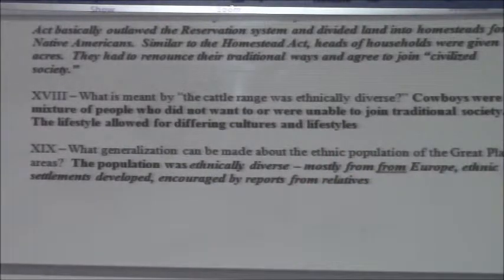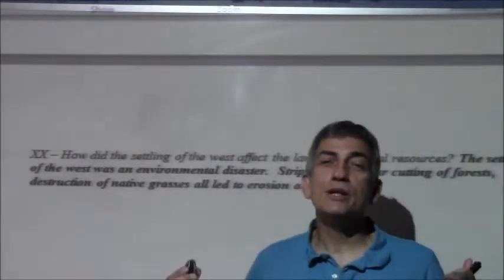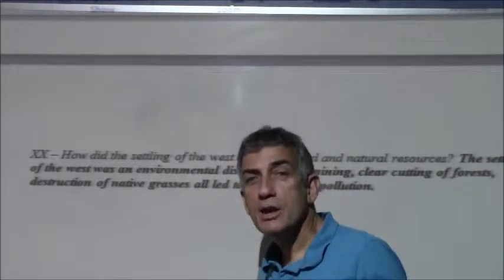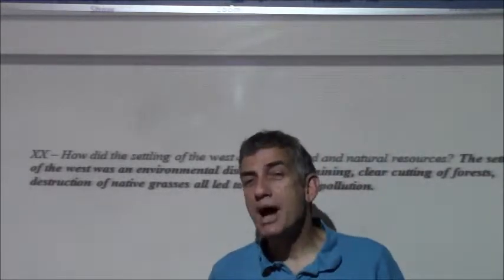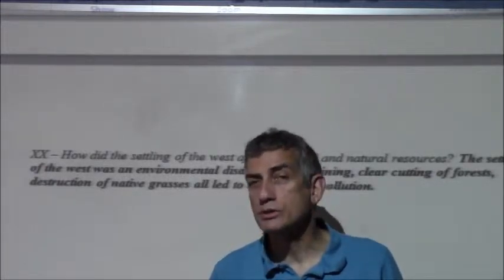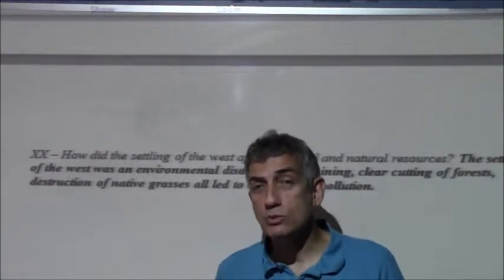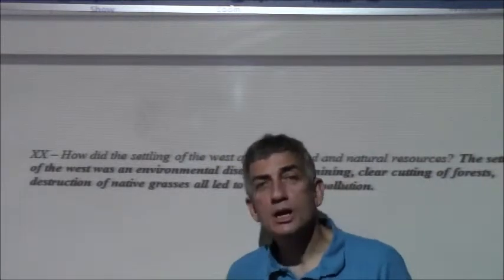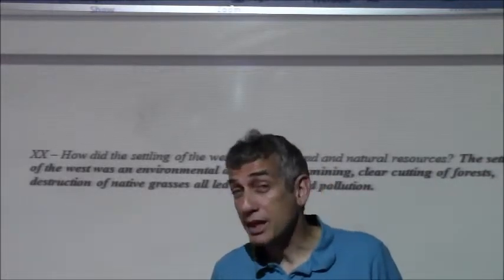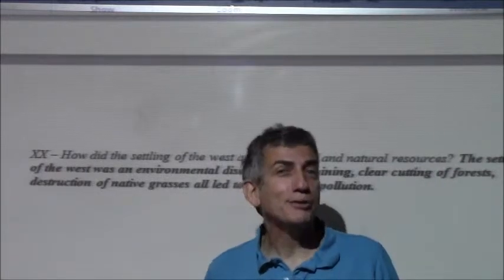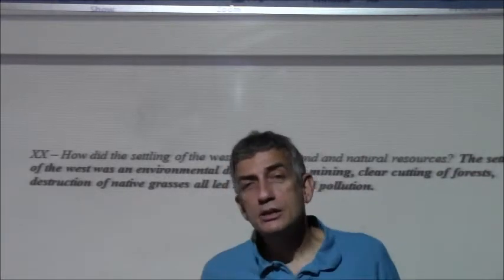How did the settling of the West affect the land and natural resources? Basically, it was an environmental disaster. There were clear cuts in which lumber was simply removed from mountains completely to build cities, towns, and railroads. There was strip mining where the tops of mountains were blown off to expose ore underneath. A lot of erosion occurred as native grasses were cut down and put to the plow, and rain would wash everything into the creeks and rivers. The idea of environmentalism had not yet occurred — these weren't bad people, they just weren't thinking about it as they were reaping the bounty of the United States.